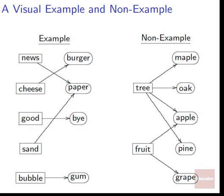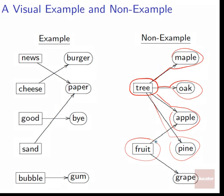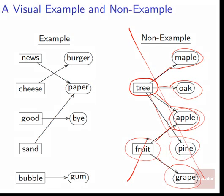Here's a non-example. We say tree, but the function gives us four different possibilities: sometimes maple, other times oak, other times apple, other times pine. And fruit sometimes spits out apple and sometimes grape. This isn't allowed because the function is only allowed to give one response to a given input. We tell it one element from the first set, it can only tell us one element from the second set. It's not allowed to give us a whole bunch of different choices — that's what it requires to be a function.